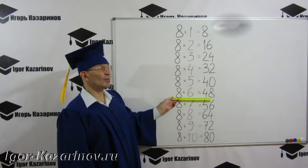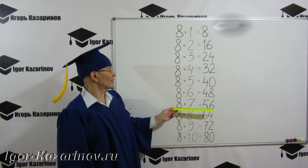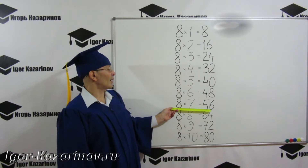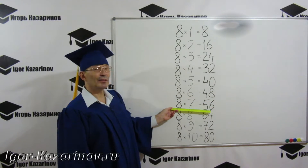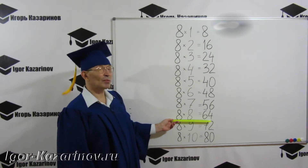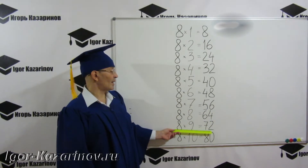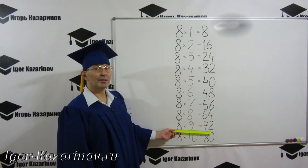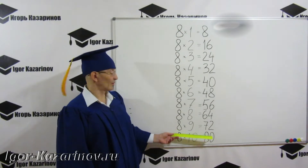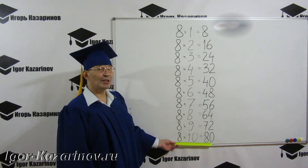8×6=48, 8×7=56, 8×8=64, 8×9=72, 8×10=80.